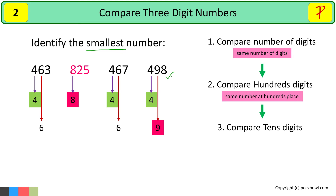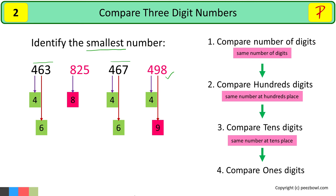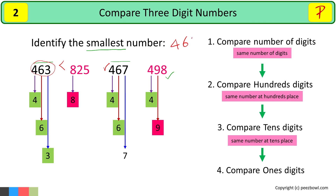So 498 is a bigger number than 467 and 463 — we will not include 498 in our next comparison. As both 463 and 467 have the same digit, 6, at the tens place, we need to compare the digits at the ones place. In 463 we have 3 at the ones place, and in 467 we have 7. Since 3 is smaller than 7, 463 will be smaller than 467. So 463 is the smallest number among these four numbers.